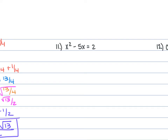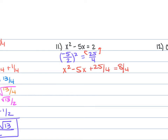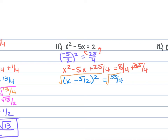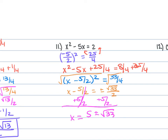For problem 11, we have x squared minus 5x equals 2. b is negative 5, so negative 5 over 2 squared is 25 over 4. Add to both sides: x squared minus 5x plus 25 over 4 equals 8 over 4 plus 25 over 4. Factor: x minus 5 over 2 squared equals 33 over 4. Take the square root: x minus 5 over 2 equals plus or minus the square root of 33 over 2. Add 5 over 2: x equals 5 plus or minus the square root of 33, all over 2.